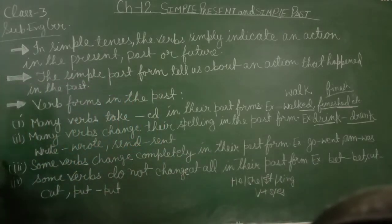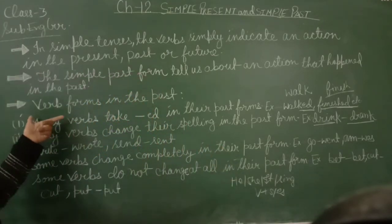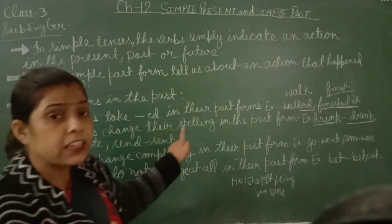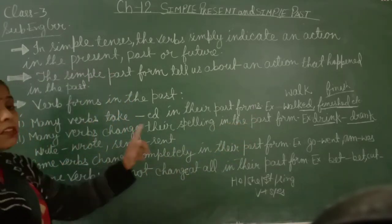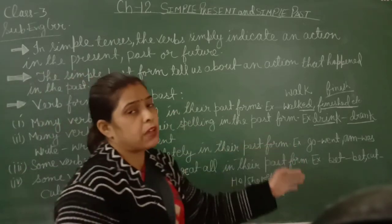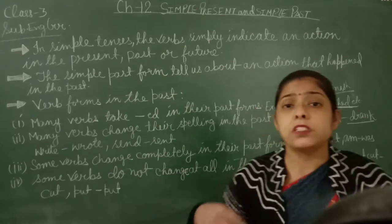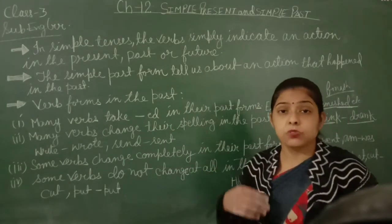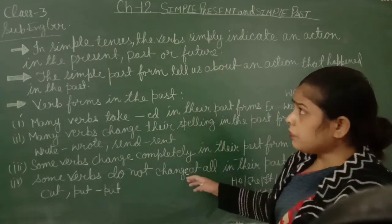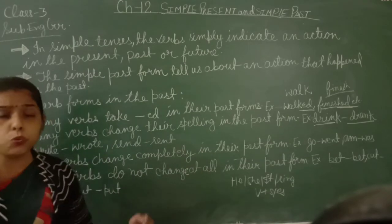So there are four points about verb forms in the past. First, many verbs take 'ed' in the past form. Second, many verbs change their spelling in the past form. Third, many verbs completely change their spellings in the past form. Fourth, many verbs do not change their form in the past at all. That was our simple past. Now we will do our exercise.